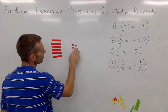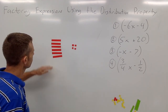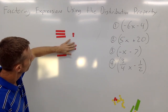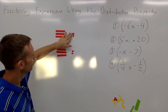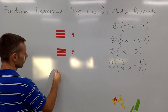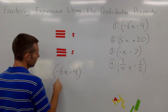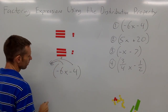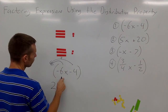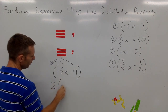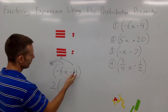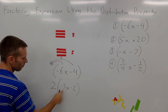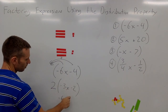Just like we did with the numbers, we're going to try to make even groups. So we can take out a 2. Negative 6x divided by 2 would be negative 3x, and negative 4 divided by 2 would be negative 2. We can check our answer — does it equal our original problem? Well, 2 times negative 3x is negative 6x, and 2 times negative 2 is negative 4.